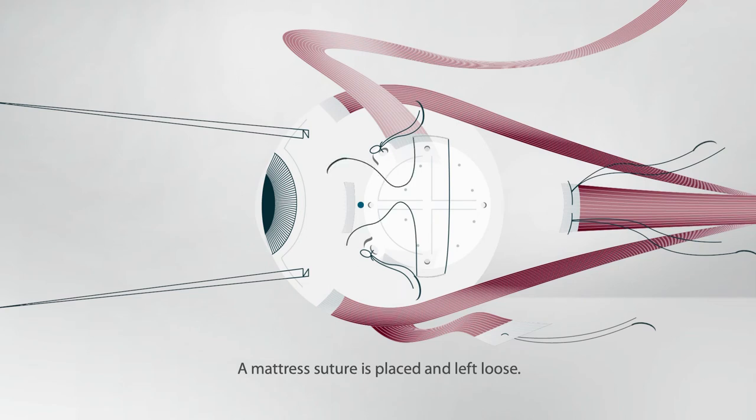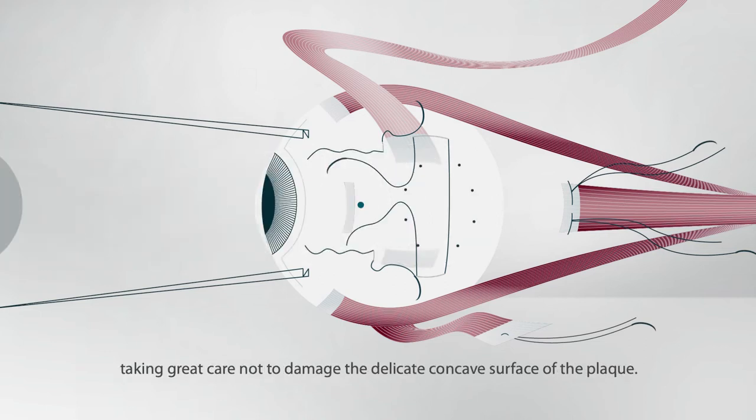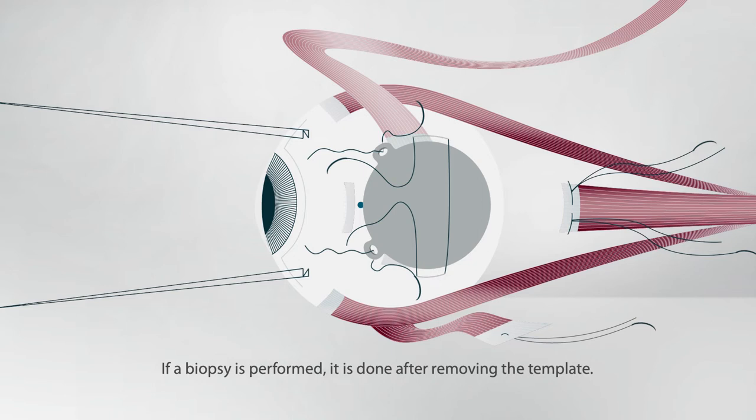A mattress suture is placed and left loose. Now the template is replaced with the radioactive applicator, taking great care not to damage the delicate concave surface of the plaque. If a biopsy is performed, it is done after removing the template. The sutures are tied.